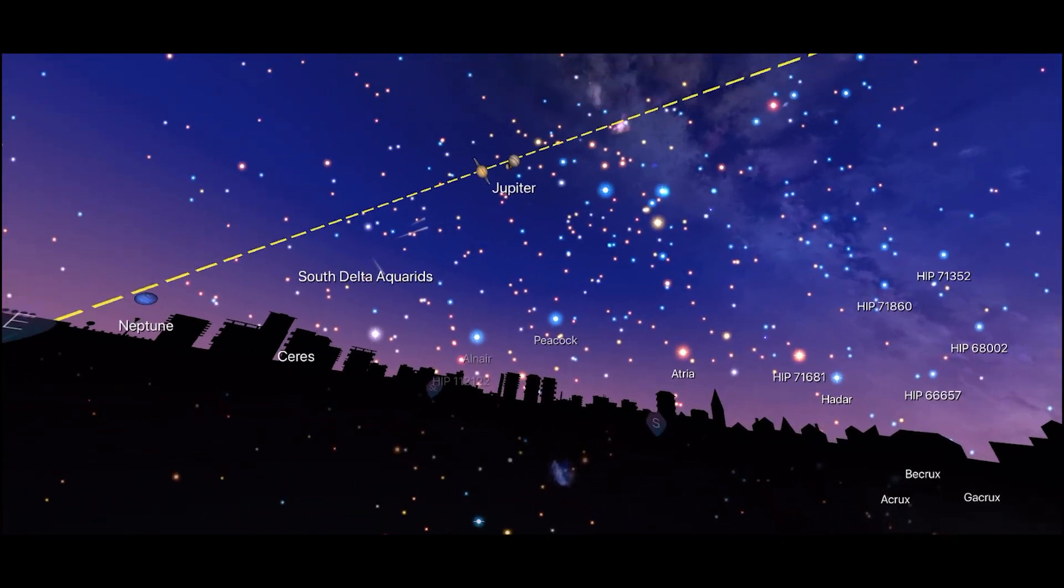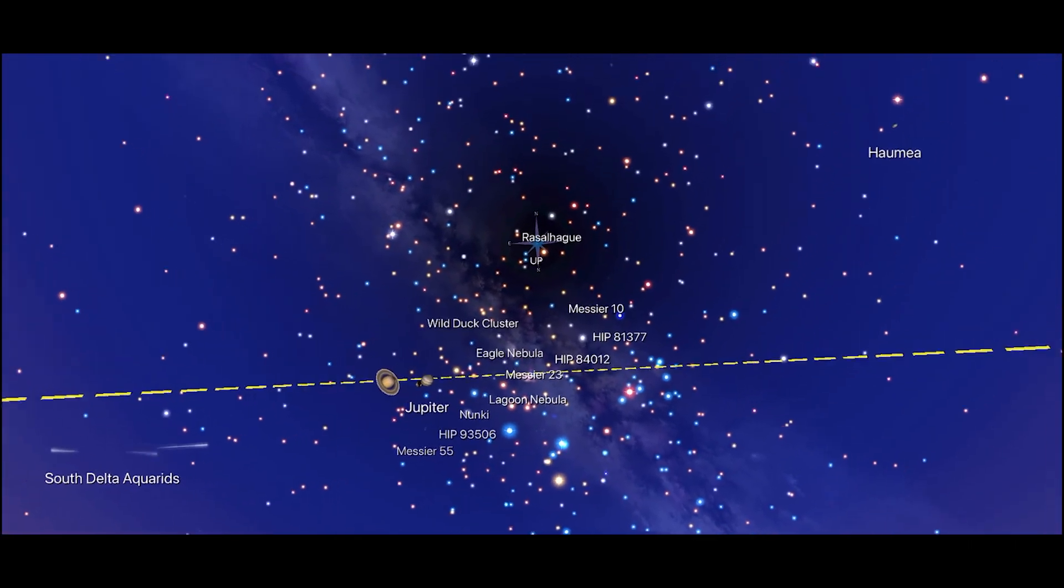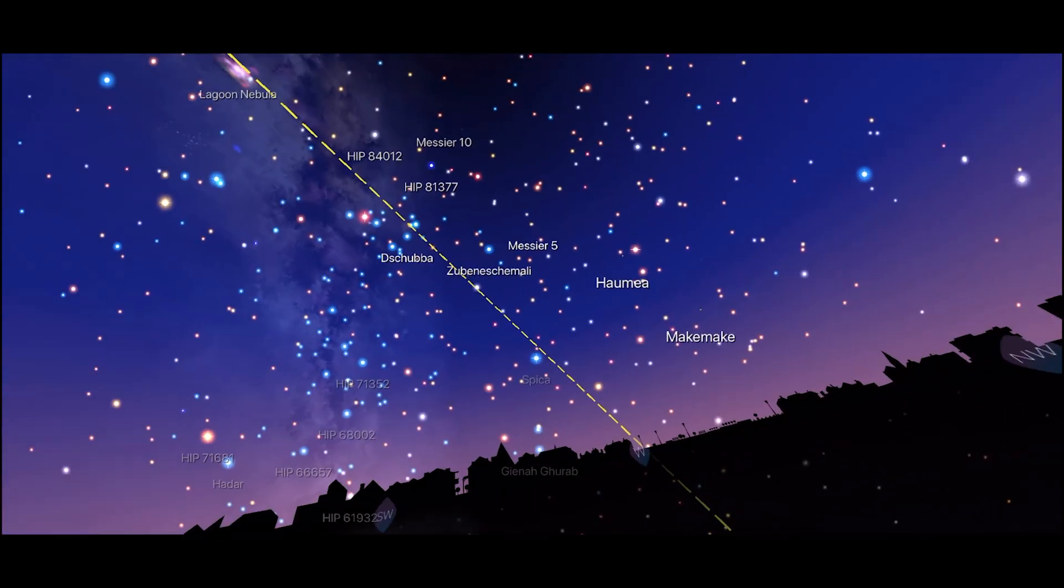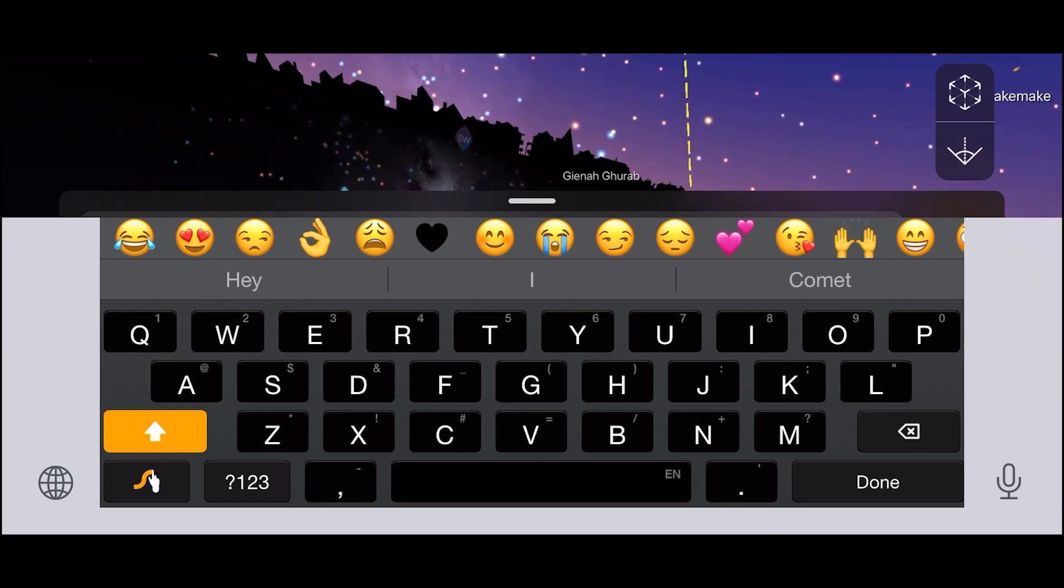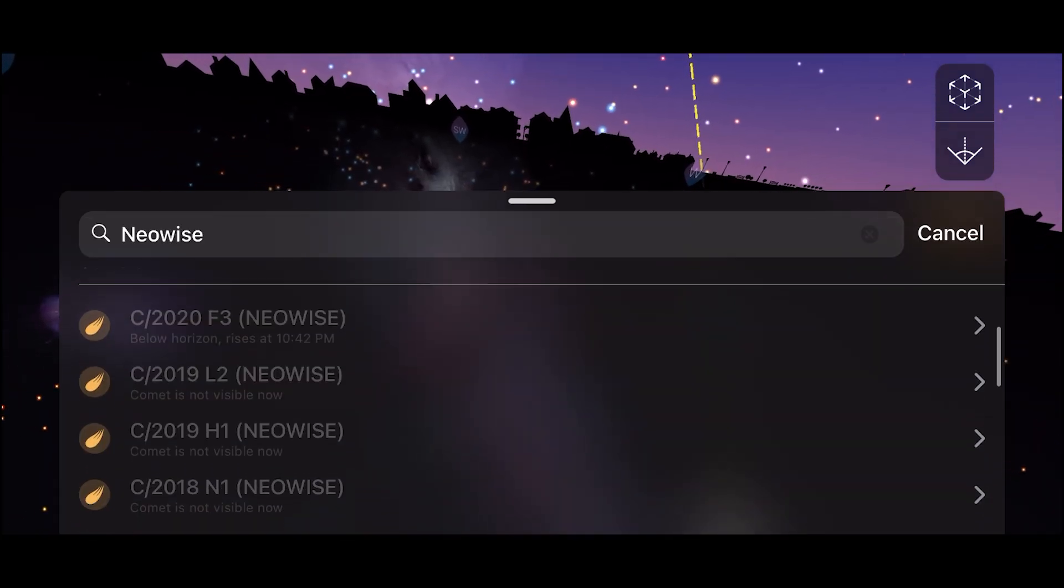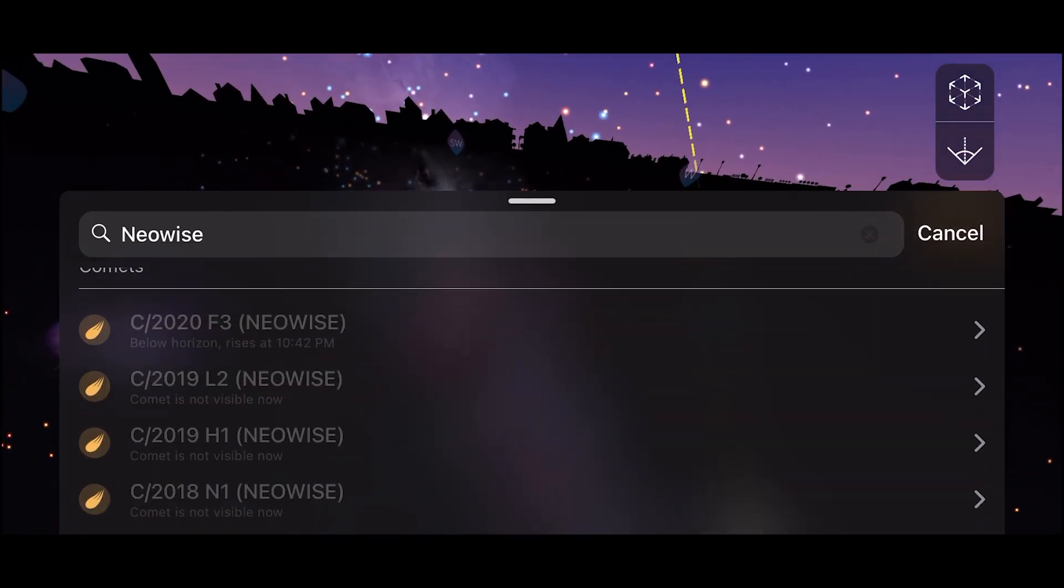So fire up the app and point it at the sky. It will show you everything that the iPhone is pointing at. To locate NEOWISE, go to search and type in NEOWISE. From the results, choose C2020 F3.